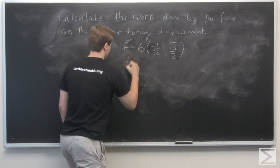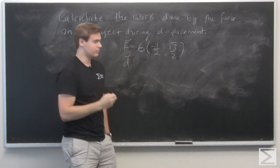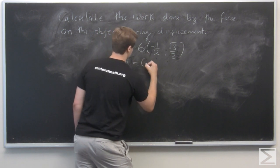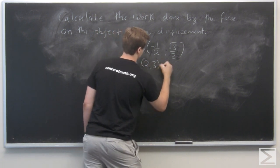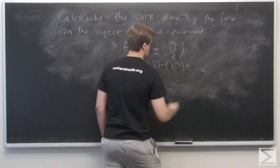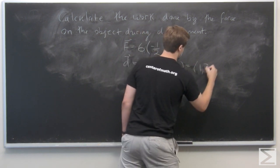So then D, the displacement vector, is given by (2,3) minus (1,0), which is just going to be (1,3).